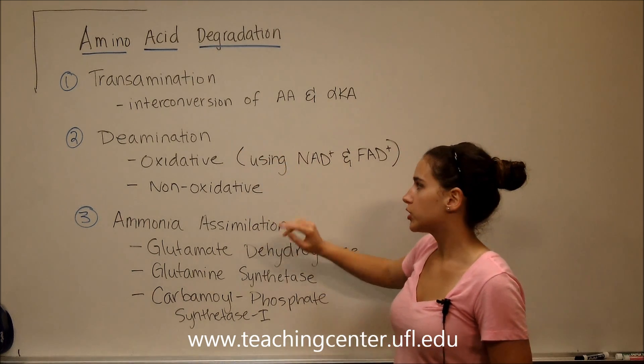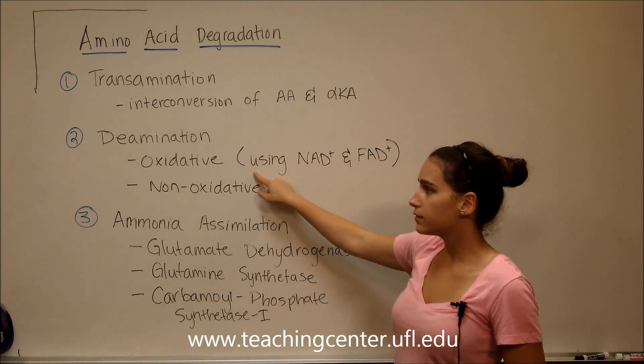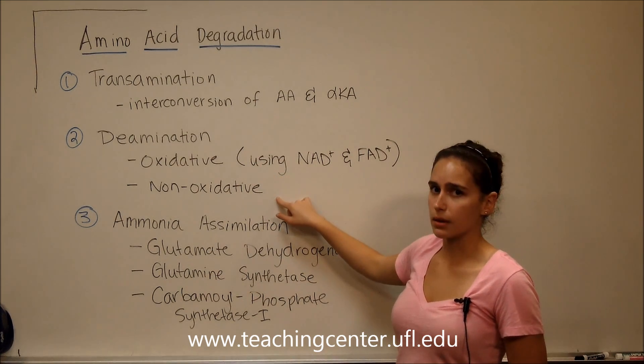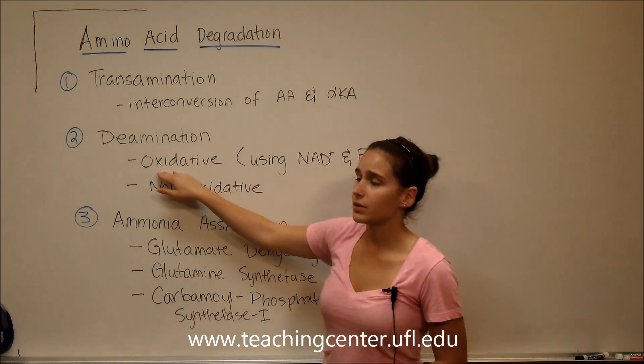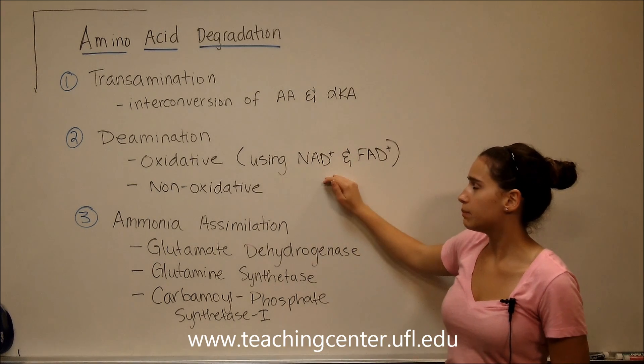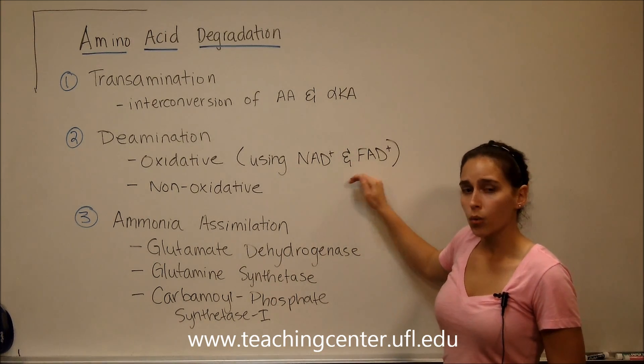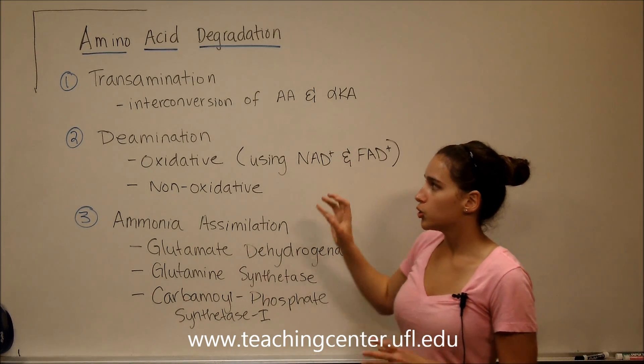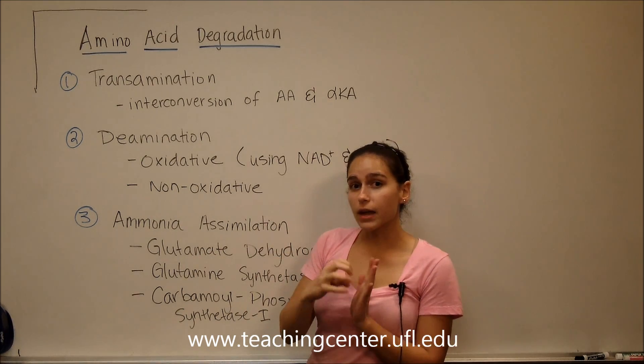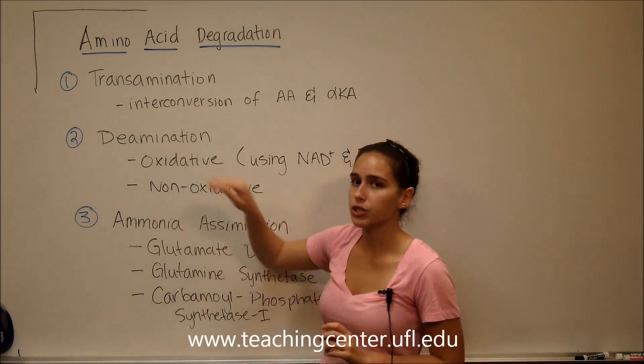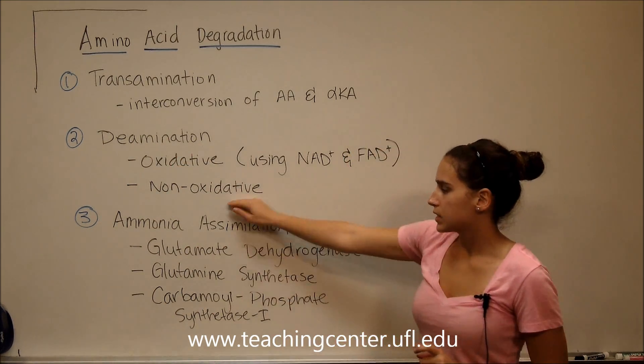Then deamination, which there's two types: oxidative deamination and non-oxidative deamination. The oxidative deamination uses NAD plus and FAD plus, which are oxidizing agents to take up that amino group, and non-oxidative processes.